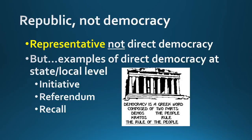Same thing with the referendum — this time, somebody in government writes that bill, but then it's put to the people for a vote. So we do have some examples of direct democracy, but again, only at state and local levels. At the federal level, it's all representative. It's a republic.